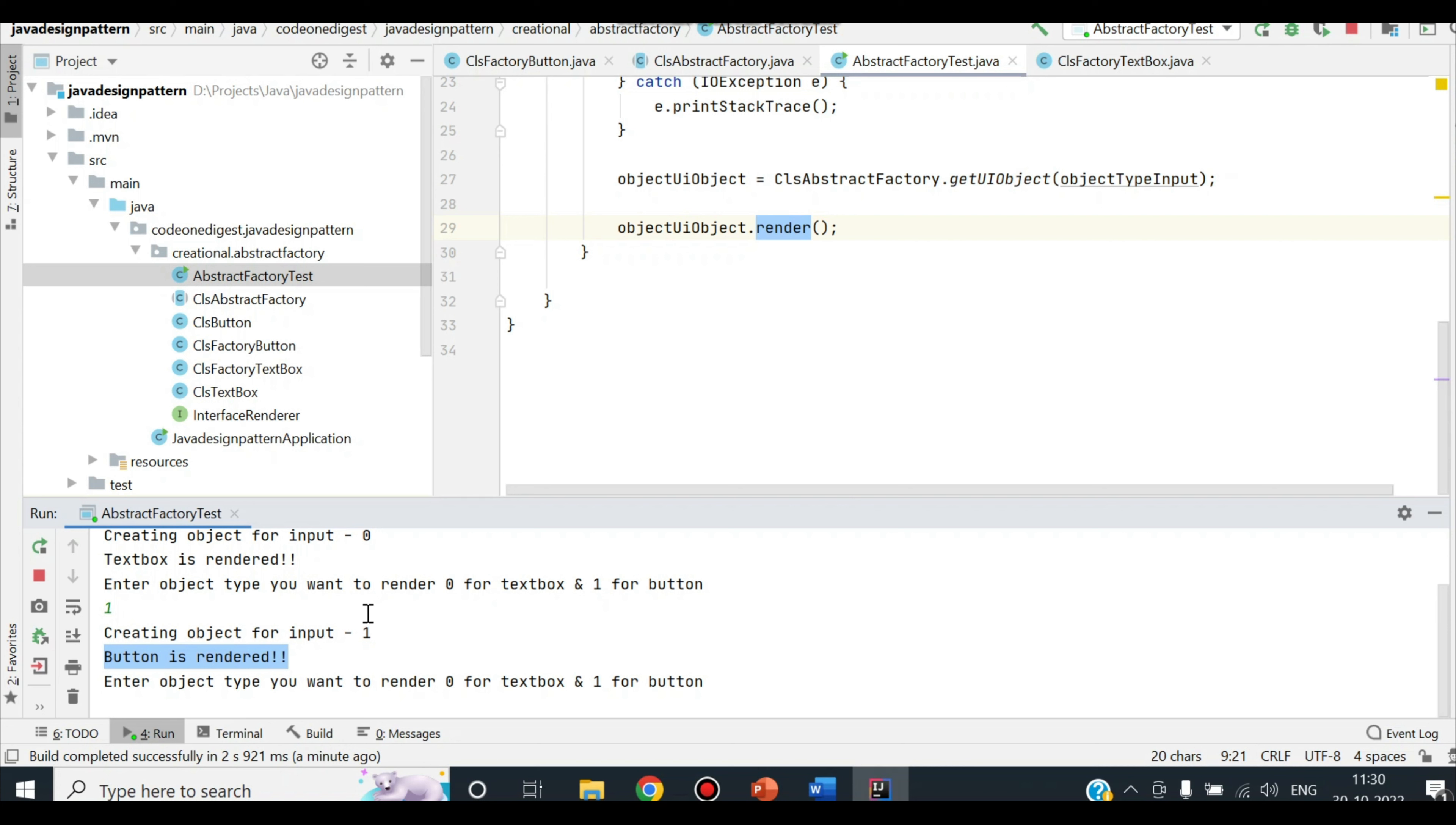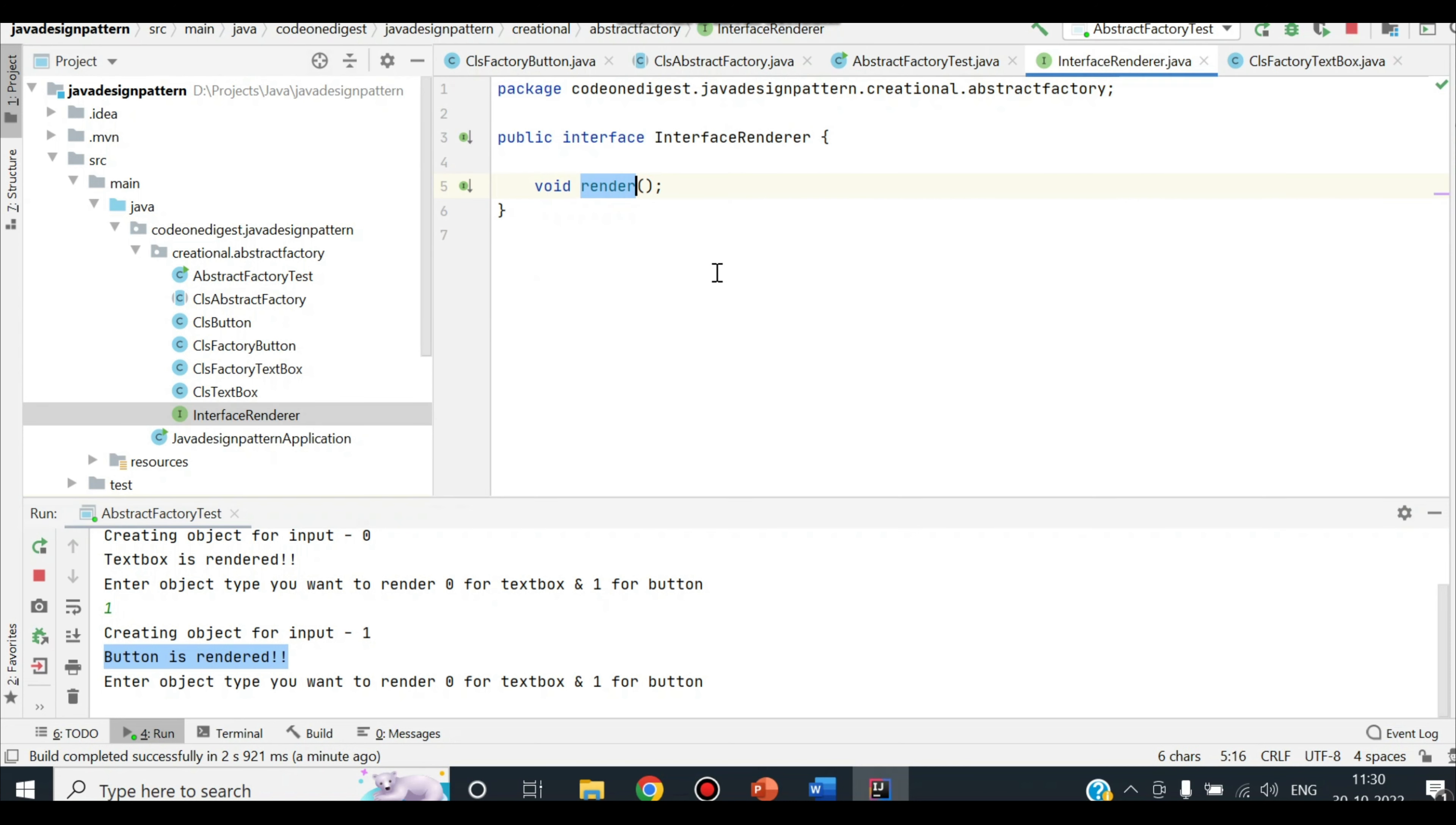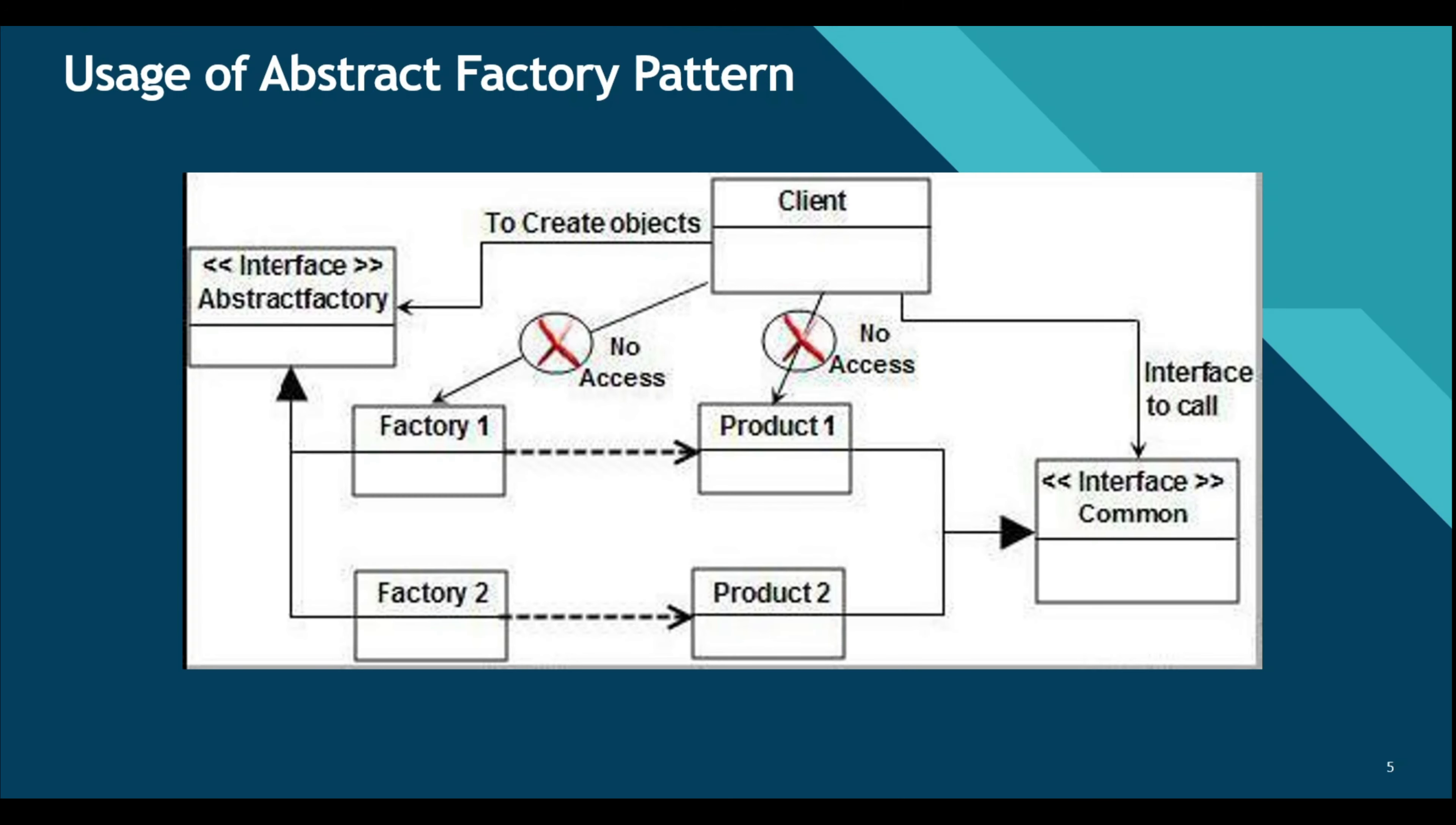So this is how the client can interact with abstract factory pattern and get the desired object out of it. This interface is just having one render method and this render method is being used in our class. So where to use this pattern? The pattern can be used where we need to create sets of objects that share a common theme and where the client only needs to know how to handle the abstract equivalence of these objects. That is, the implementation is not important for the client.